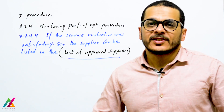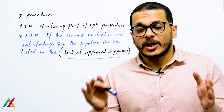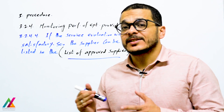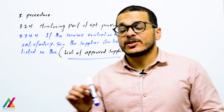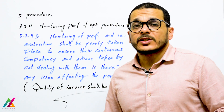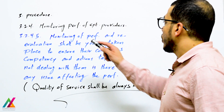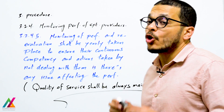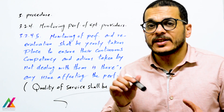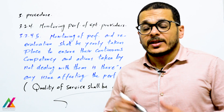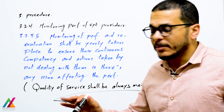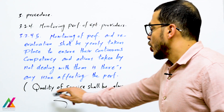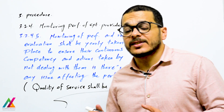If the service provided is found satisfactory after evaluation, the supplier can be listed on the approved suppliers list — a historical record for the lab of all approved suppliers for future use. Monitoring of performance and re-evaluation of the external provider shall take place yearly to ensure their competency. If any issue affecting performance arises, actions shall be taken immediately, including removing them from the approved suppliers list, because quality of service must always be maintained to protect lab activities, results, and customer confidence.